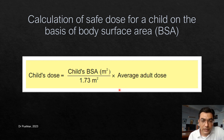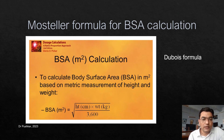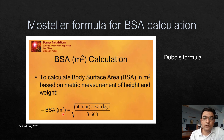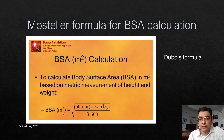To calculate the body surface area of the child, we use the Mosteller formula: BSA equals the square root of (height in centimeters multiplied by weight in kg, divided by 3600), giving BSA in square meters. This is an important formula for calculating the body surface area of the child.